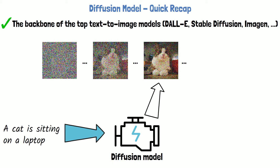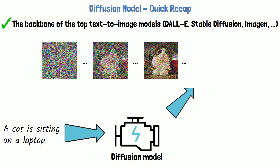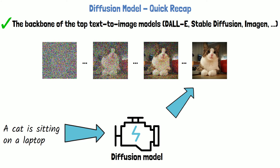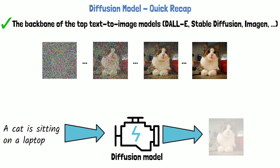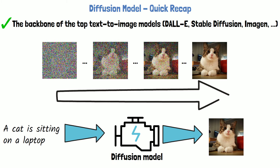The three dots imply that we skip steps in this example. Finally, we get a nice clear image of a cat, which we take as the final output of the diffusion model for the provided prompt. The noise removal process usually takes between tens to thousands of steps, so it comes with a latency drawback.